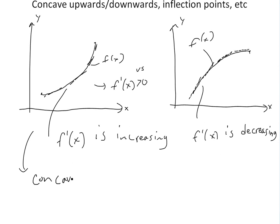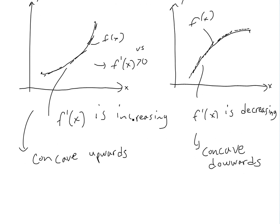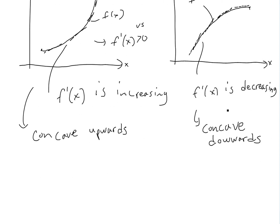So this one is called concave upwards. And in this case, this other one is concaving downwards — whenever the slope is decreasing. From the graph, f of x is increasing and concave upwards. Similarly, if the slope is decreasing, it's concave downwards.